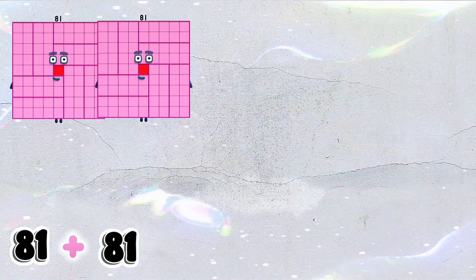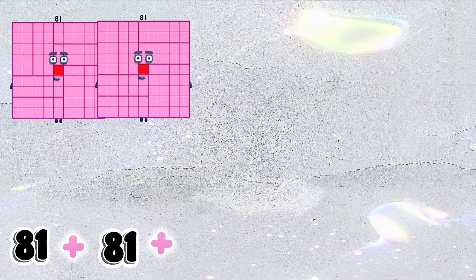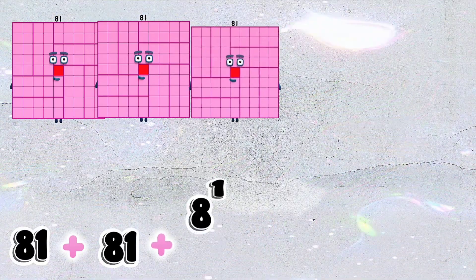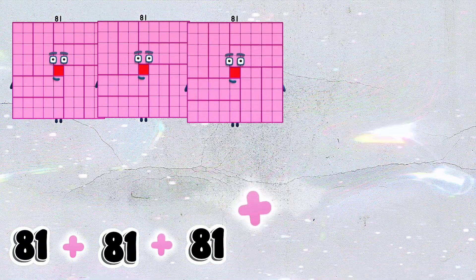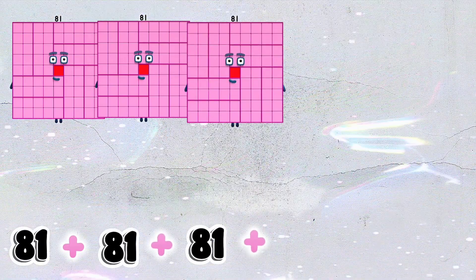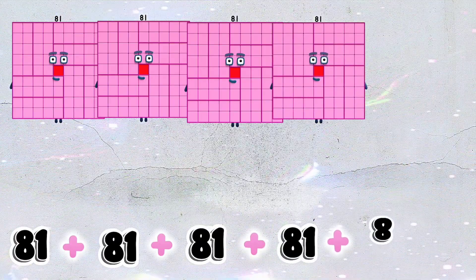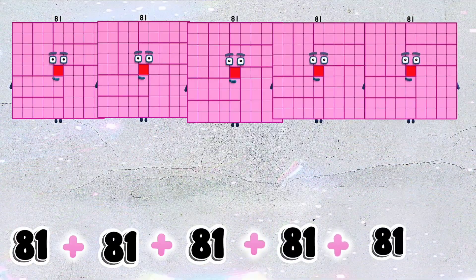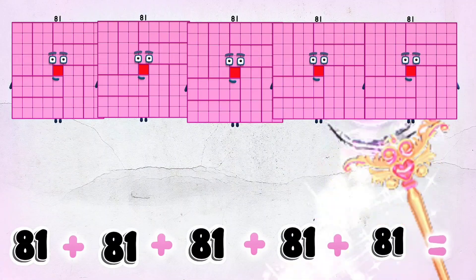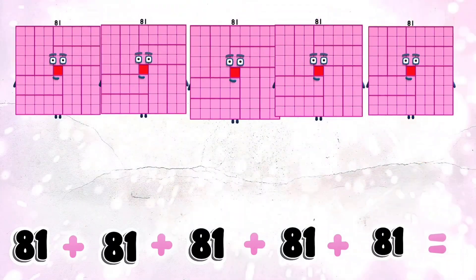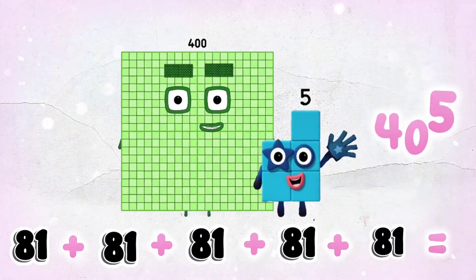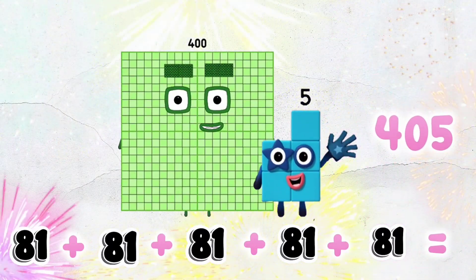81 plus 81 plus 81 plus 81 plus 81 is equals to 405.